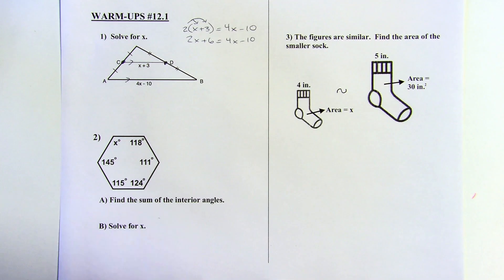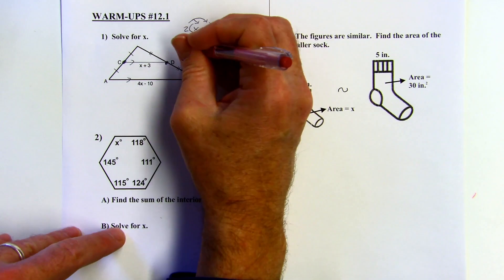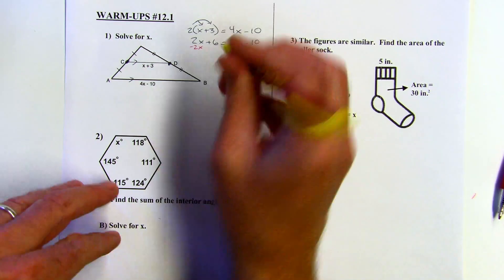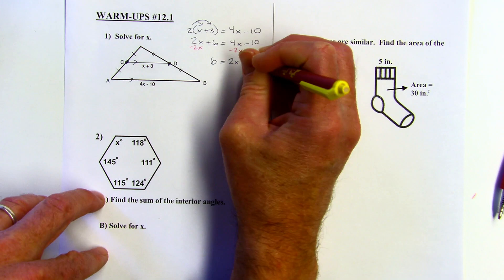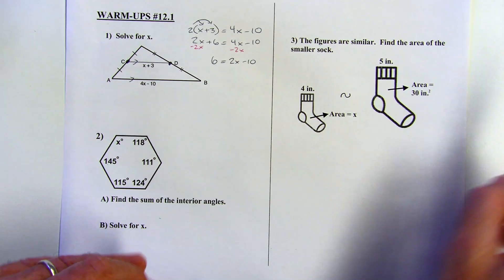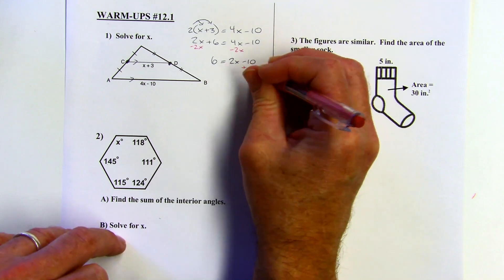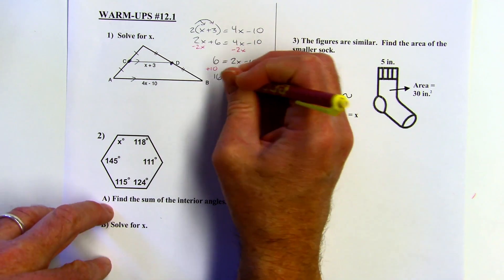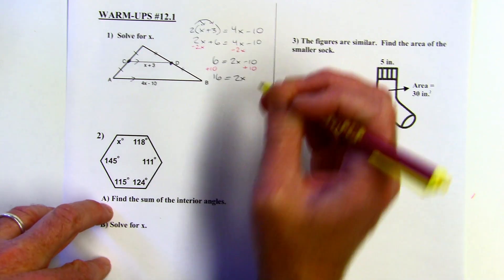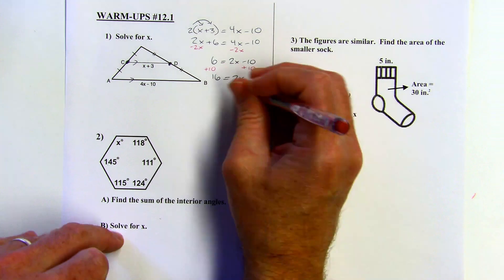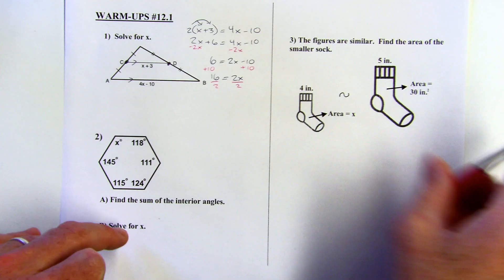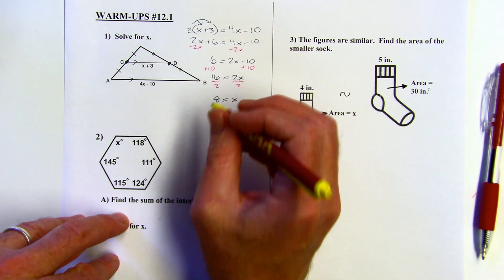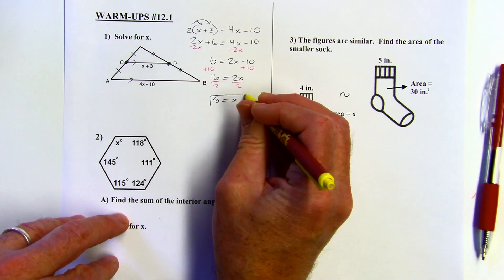And then I want to combine the X terms. So I'll subtract 2X from both sides. 6 equals 2X minus 10. I want to isolate the X now, so I'll add 10. And then I'm going to divide by 2. And X equals 8 then. And that's my solution.